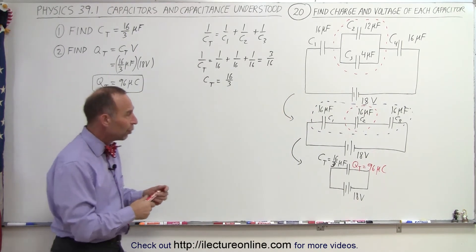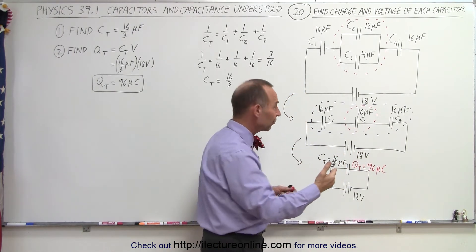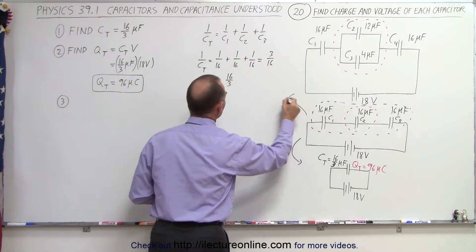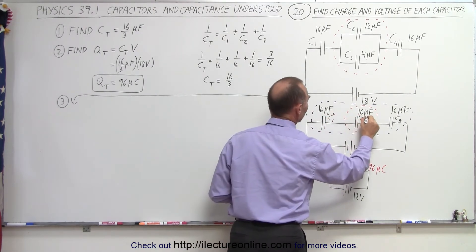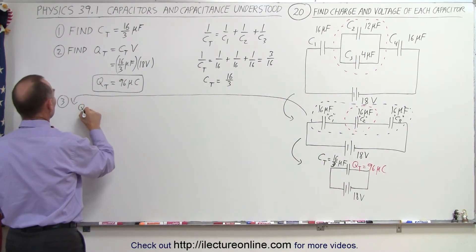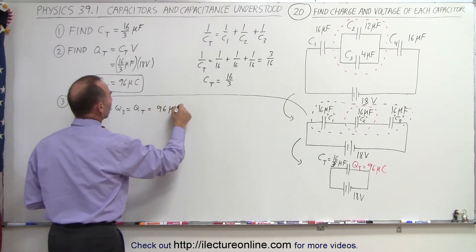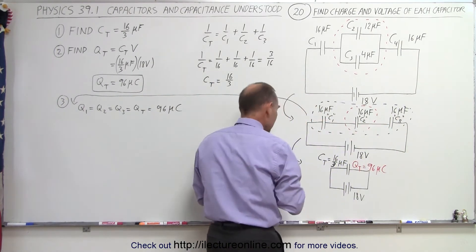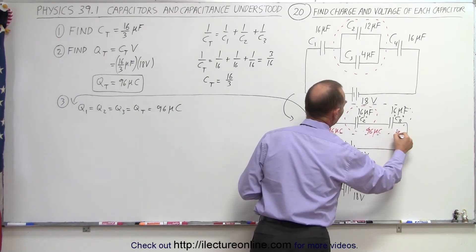Now, how does that charge distribute itself over these three equivalent capacitors? Since these are in series, the charge in series is the same for every capacitor. So for step three, for this intermediate circuit, we can say Q1 equals Q2 equals Q3 equals Q total, which is equal to 96 microcoulombs. The charge is equally distributed on each of the three series capacitors — each gets 96 microcoulombs.